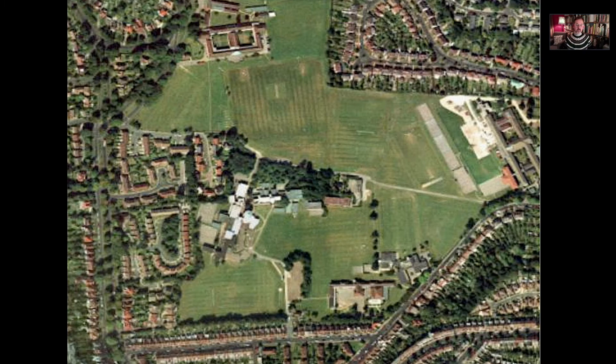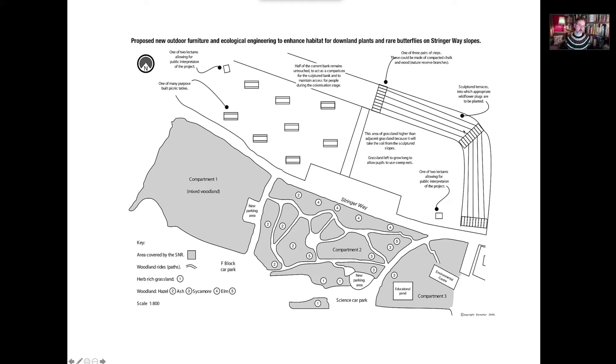This is the site we had in mind — the Surrenden campus, 28 hectares with six educational institutions on it. This little area, about half the size of a football pitch, was what we had in mind. You can see the linear banks we planned to produce — this one is south-facing and this one is east-facing.